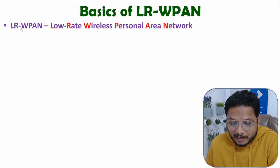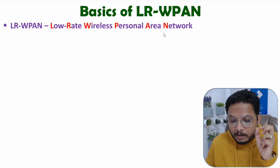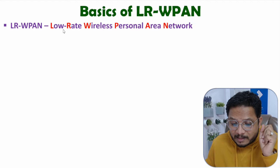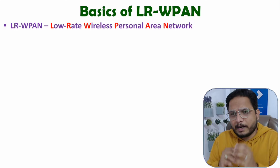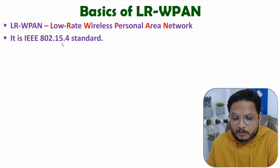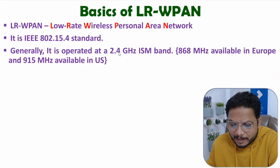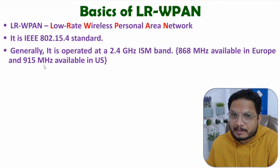Let us start with the first agenda, that is basics of LRWPAN. LRWPAN means low rate wireless personal area network. Here we are dealing with a wireless personal area network having the characteristic of lower data rate, in which nodes can communicate at lower data rate. Majority of devices are operated at 2.4 GHz ISM band with this standard. But in Europe, 868 MHz is available, and in the US, 915 MHz band is available with this standard.